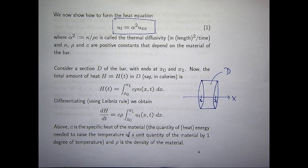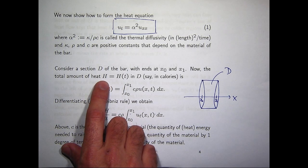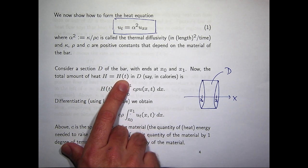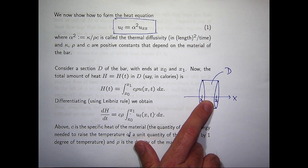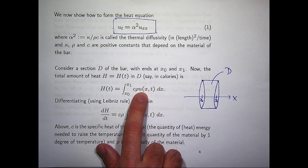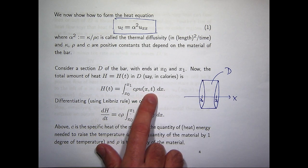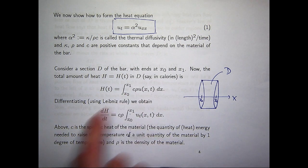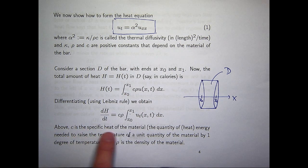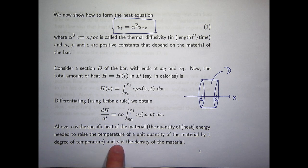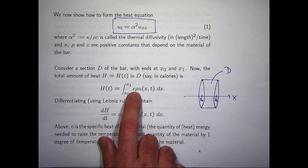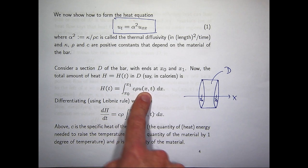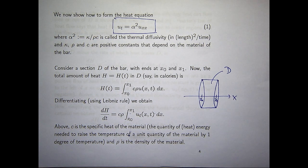Now, if you want to calculate the total amount of heat at time t in this region, it's just the integral of this. Now, c here, we're assuming c is constant. It's the specific heat of the material and rho is the density of the material. So you multiply that through by the temperature function and you integrate from one end of the bar to the other.